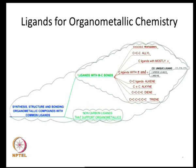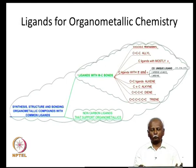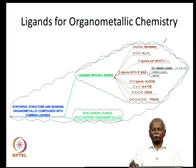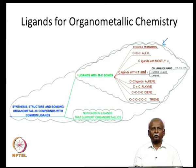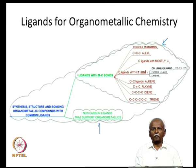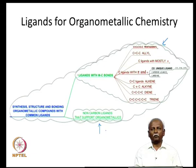If you look at the ligand space available for organometallic chemistry, you will notice that it can be roughly divided into two halves, especially the ones which have a metal-carbon bond. Compounds that support organometallic chemistry but do not inherently generate a metal-carbon bond — such as phosphines and nitrocarbonyls — are another class, indicated by the smaller cloud. The ligand space with only metal-carbon bonds can be divided roughly into two groups.